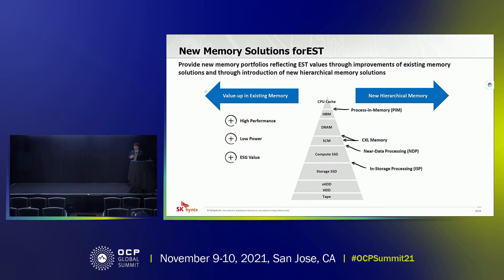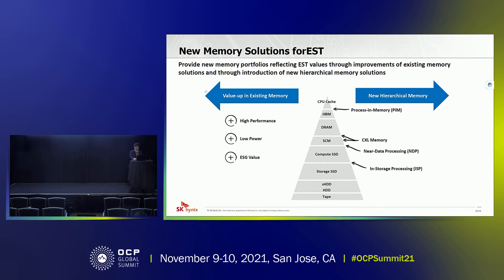What does SK Hynix do to achieve this goal, especially for the Memory Forest? There are two key factors. The first is adding value in existing memory — high-performance and low-power memory has a really good impact on TCO improvement and energy efficiency. The second is future technologies: CXL is coming, and for handling huge amounts of data, we are also considering PIM — processing-in-memory — and near-data processing in storage. With these, SK Hynix can improve energy efficiency by reducing data movement and lower power consumption.